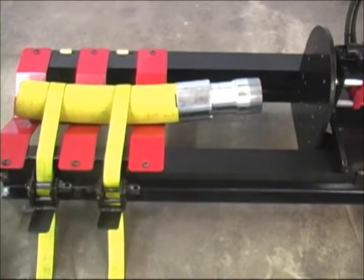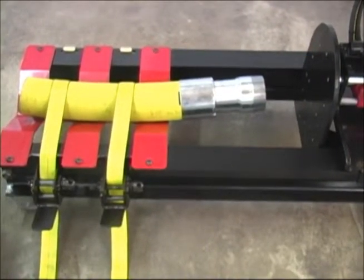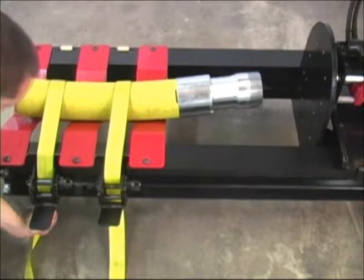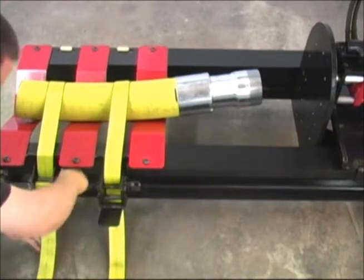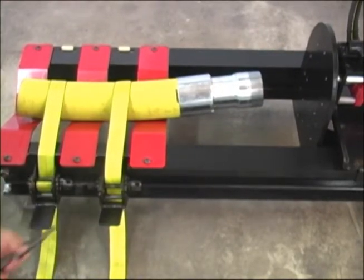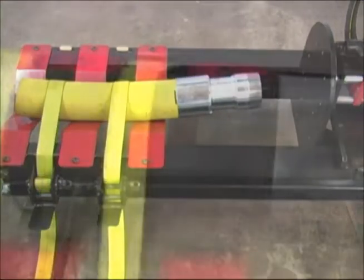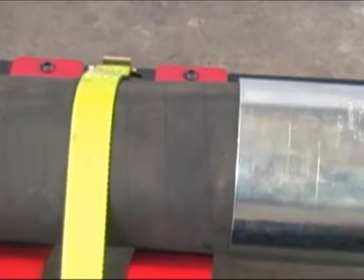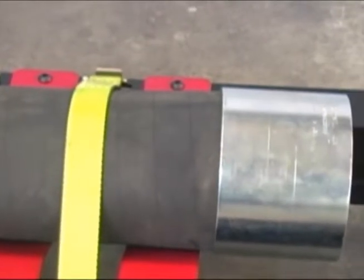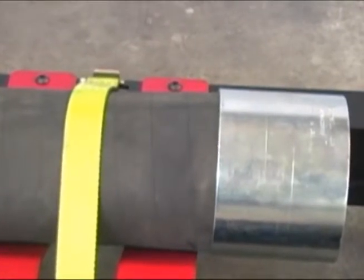The highly flexible strap tie-down system easily adapts to securely clamp hoses from 2 to 12 inches. For the smaller hoses, the straps are passed under the frame rails as shown. And for the larger hoses, the straps are passed directly over the hose and threaded through the ratcheting clamp mechanism.